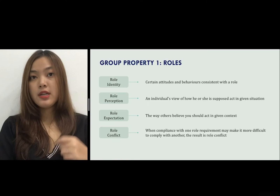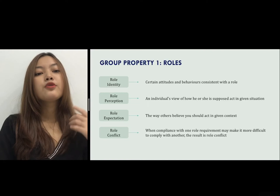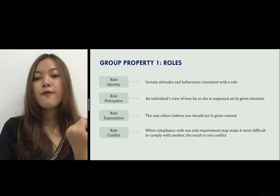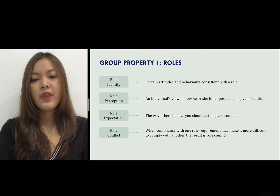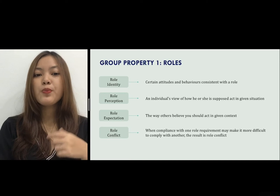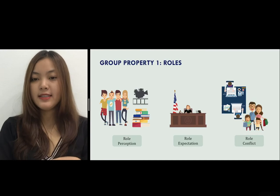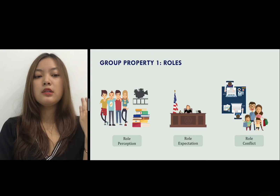A psychological contract is an unwritten agreement that sets out what management expects from an employee. Role conflict occurs when the expected behaviors don't match the behaviors being expected — an example can be found in work-family conflict, where expectations placed on someone as a husband and father differ from those placed on him as an executive.